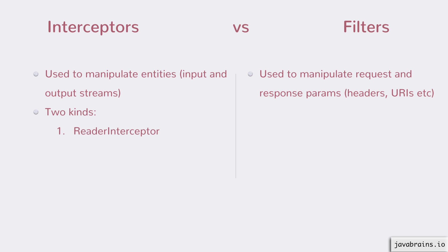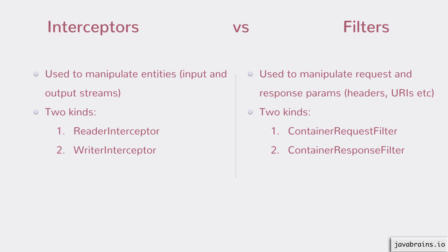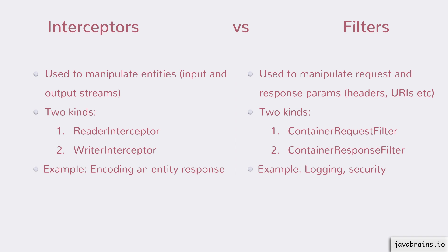There are two kinds of interceptors: the reader interceptor and the writer interceptor. Similarly, there are two kinds of filters: the container request filter and the container response filter. An example for an interceptor would be encoding an entity — we saw gzip as an example, which is a perfect use case. We have already seen examples for filters: logging, security, and all the cross-cutting concerns which manipulate the request and response parameters.